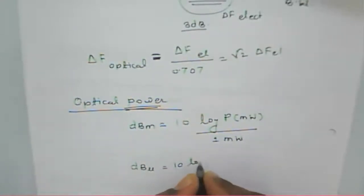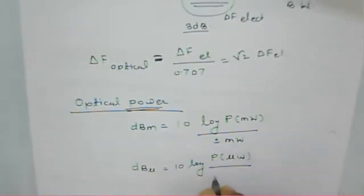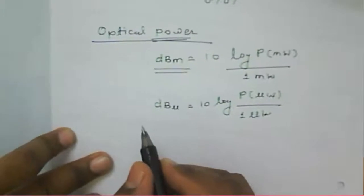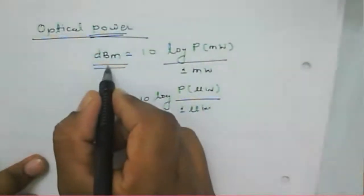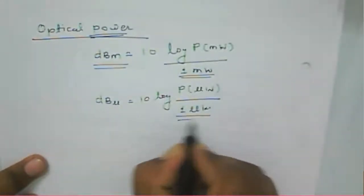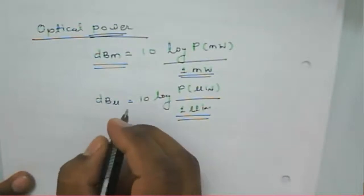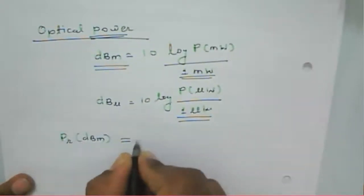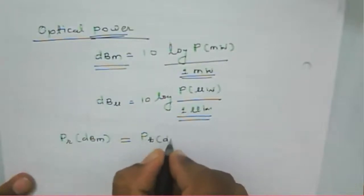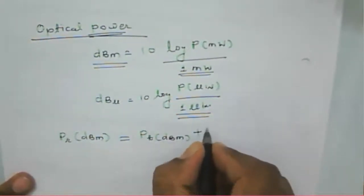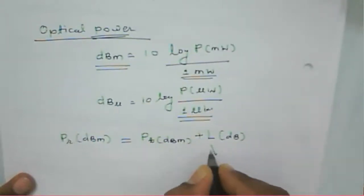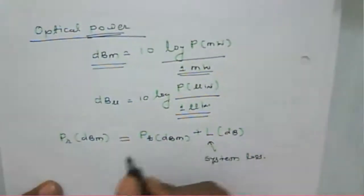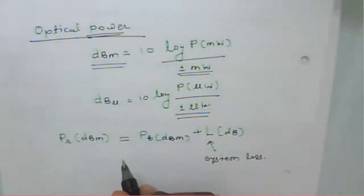The power received in terms of dBm depends on how much power is transmitted, which is also in dBm, and what the total system loss is. So power received equals power transmitted minus total system loss. We will see in detail how that power calculation takes place in optical fiber.